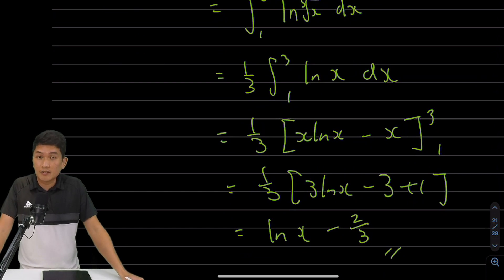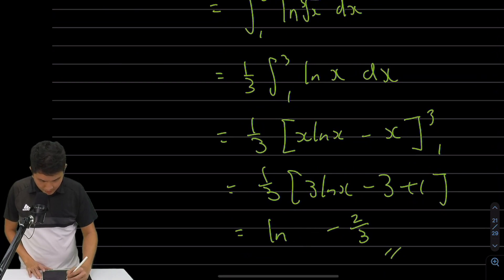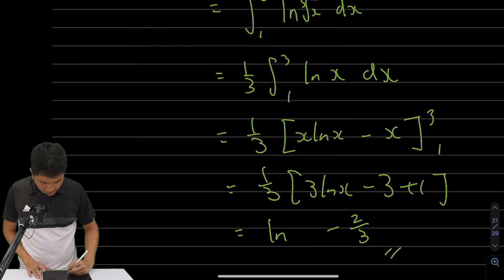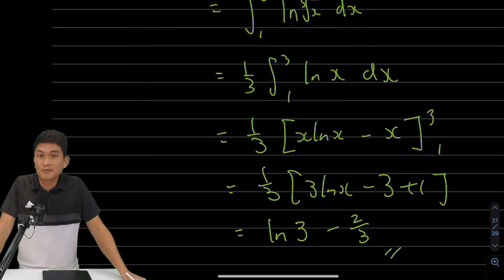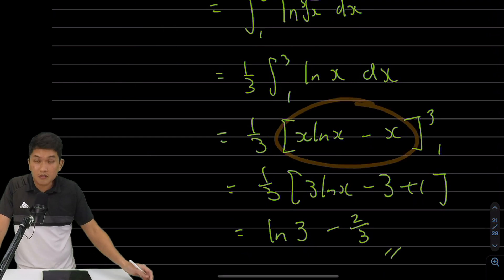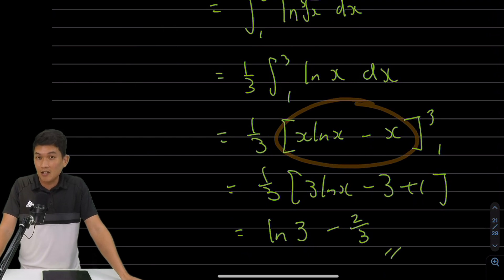The answer involves natural log of 3 minus two-thirds. The only problem is we have not learned how to do this yet. In our syllabus, we do not know how to integrate natural log of x. So what are our options?